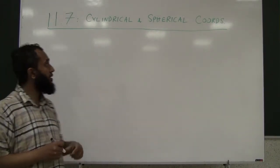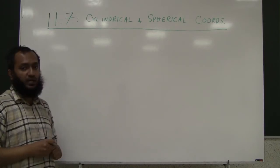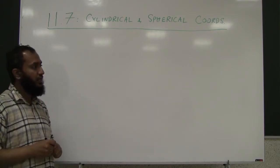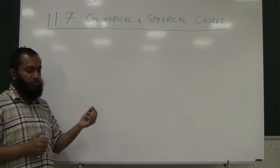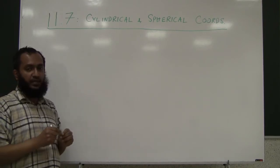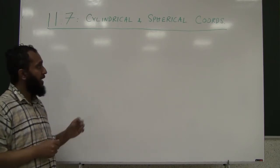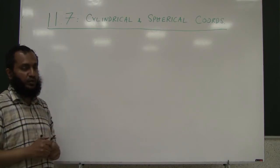We will start this lecture with section 11.7, Cylindrical and Spherical Coordinates. We have already seen in calculus 1 the polar coordinate system. Instead of describing a point in 2D as XY coordinates, you describe in terms of R, the radius, which means the distance to the origin and the angle that makes it the positive x-axis, the ray to the point of origin.